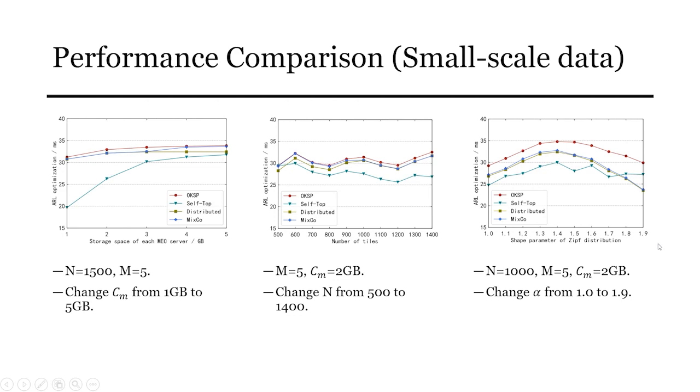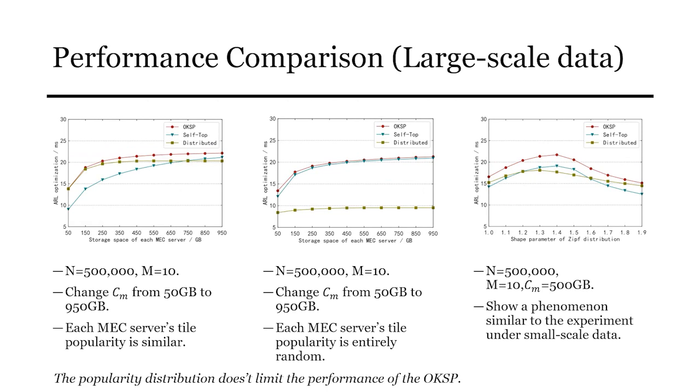In the left picture, each MEC's popularity is similar, while the right picture, each MEC server's popularity is entirely wider. Under different popularity distribution scenarios, the safe-top and distributed performs very differently. In contrast, the popularity distribution doesn't limit the performance of the OKSP algorithm, and it can keep steady. The last picture presents a phenomenon similar to the previous experiment under small-scale data. In general, the OKSP algorithm consistently performs better than other algorithms.